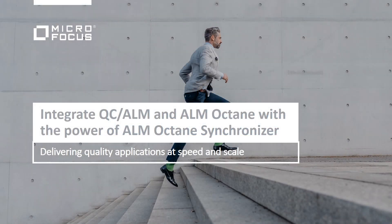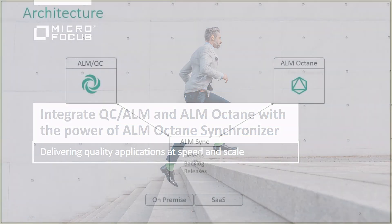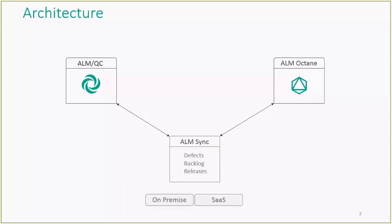In this session we will cover ALM Octane synchronization process. ALM Octane is connected to ALM and QC.NET via an ALM synchronizer service. The service should be deployed in a different machine and there is an option to have this configuration both on-prem and SaaS.